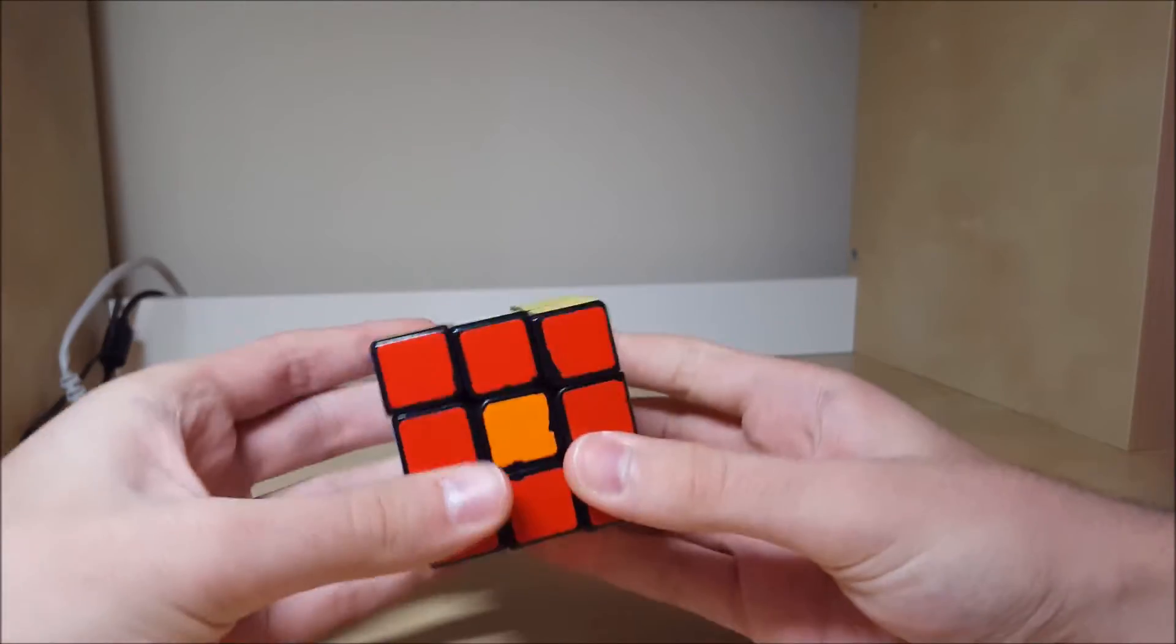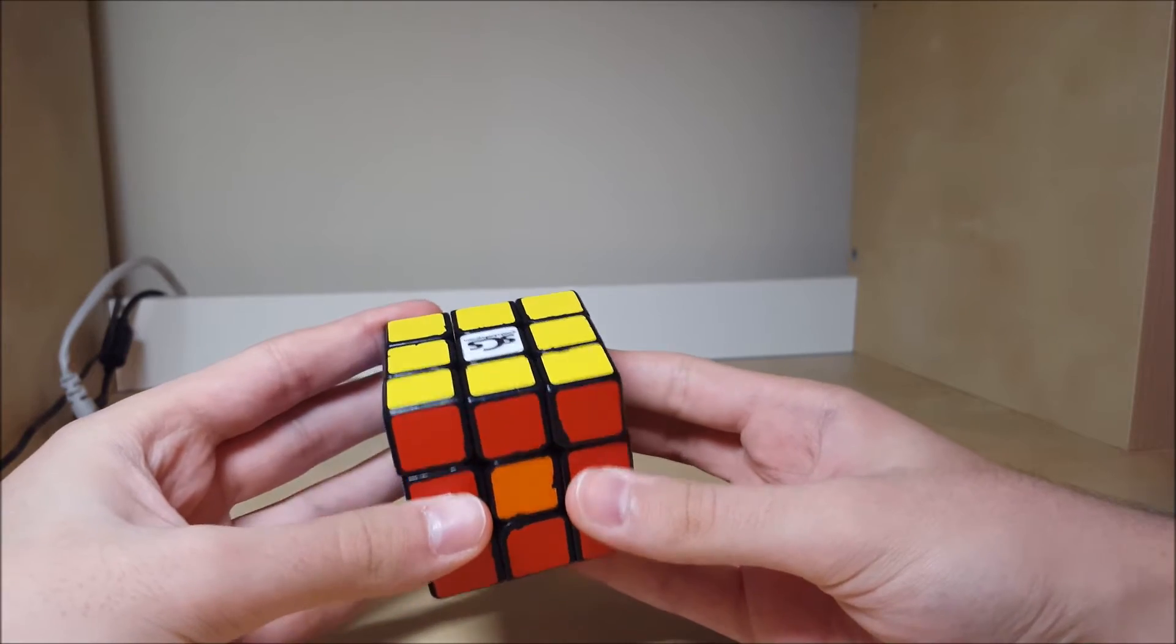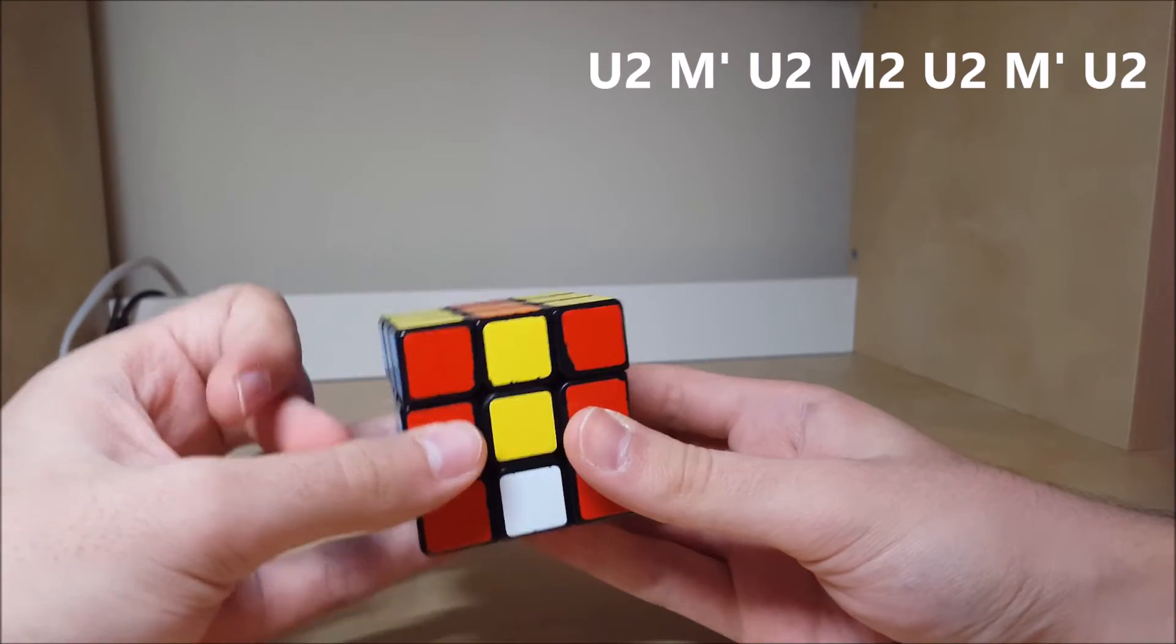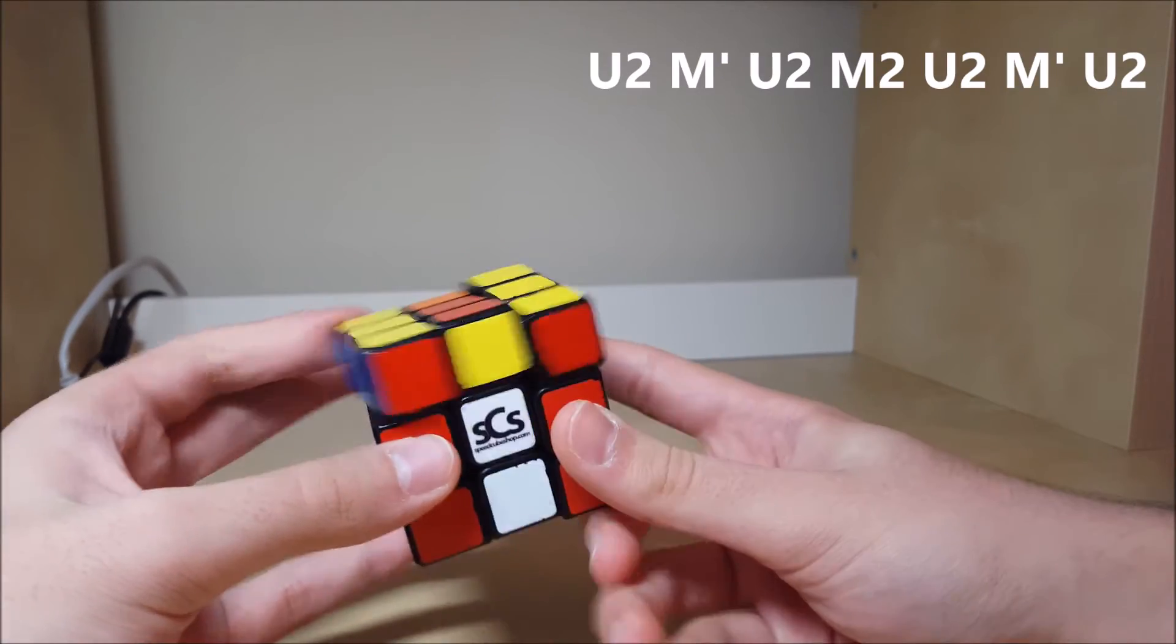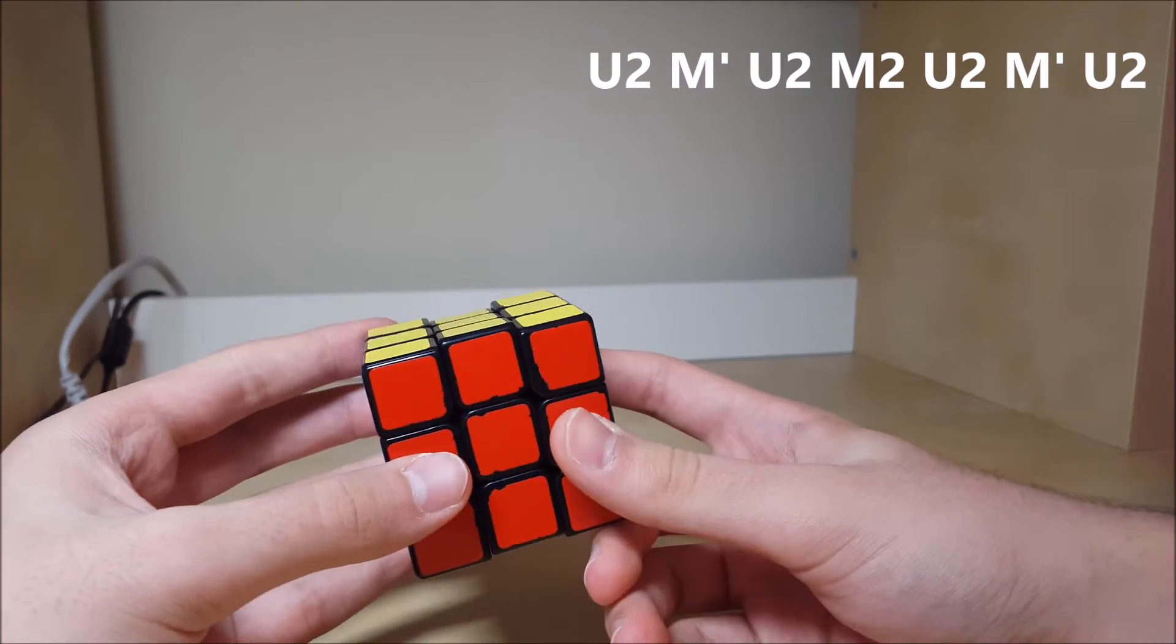If you're going to do an algorithm that uses M's and U's, do U2, M', U2, and then M2, U2, M', U2. Like that.